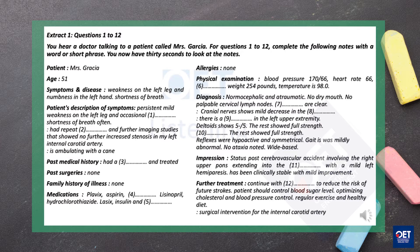There is a mild increased tone in the left upper extremity. Deltoid shows 5 over 5. The rest shows full strength. Hip flexion is 5/5 on the left. The rest shows full strength. Reflexes were hypoactive and symmetrical. Your gait is mildly abnormal. No ataxia noted. Wide based, ambulated with a cane. Status post cerebrovascular accident involving the right upper pons extending into the right cerebral peduncle with a mild left hemiparesis.